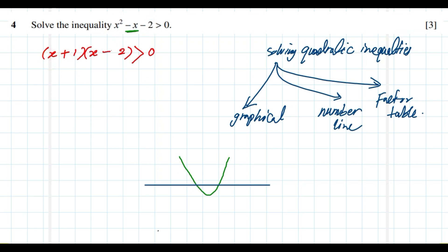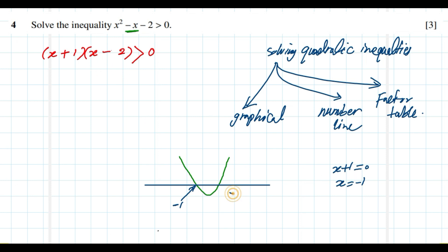The first root is at x equals negative 1, because from the factor x plus 1, setting x plus 1 equals 0 gives x equals negative 1. The second root is at x equals 2, because from the factor x minus 2, setting x minus 2 equals 0 gives x equals 2.